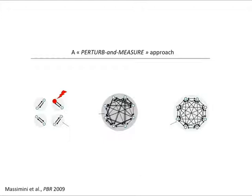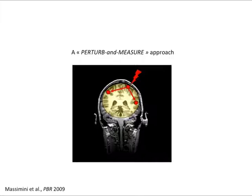Why? Because in the case of a system that is modular and not integrated, the response would be just local. On the other hand, in a system that is integrated but lacks differentiation, the response would be widespread but stereotypical and simple — everything is active or everything is silenced. Only in a system that balances integration and differentiation will you have a response that is widespread and specific, variable at the same time — in a word, a complex pattern of spatiotemporal activation.